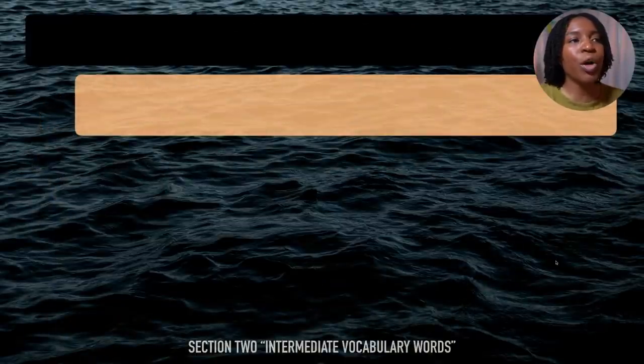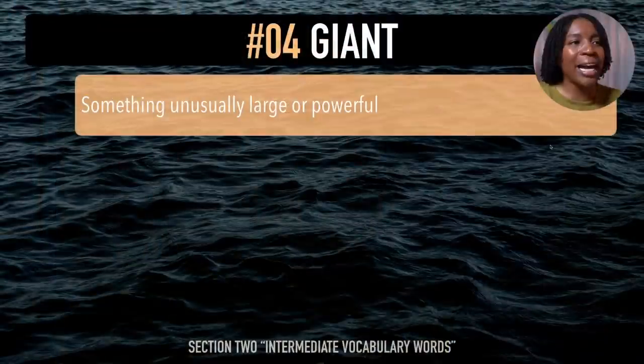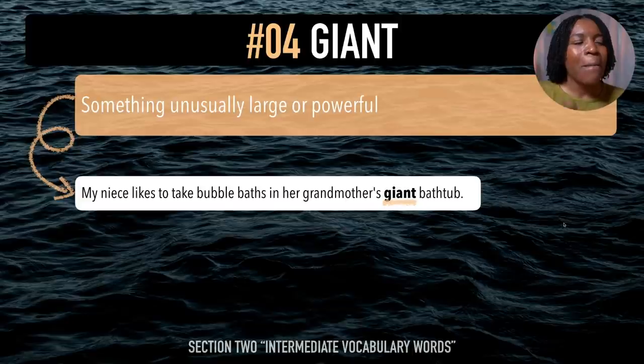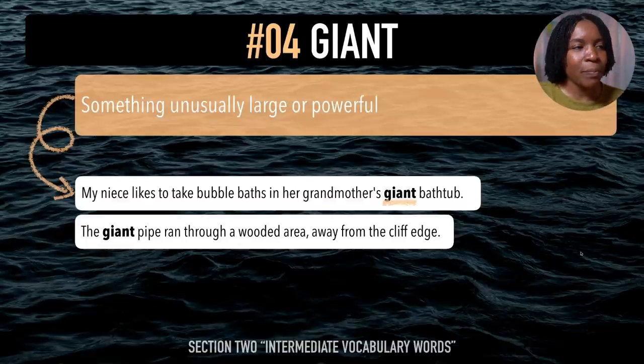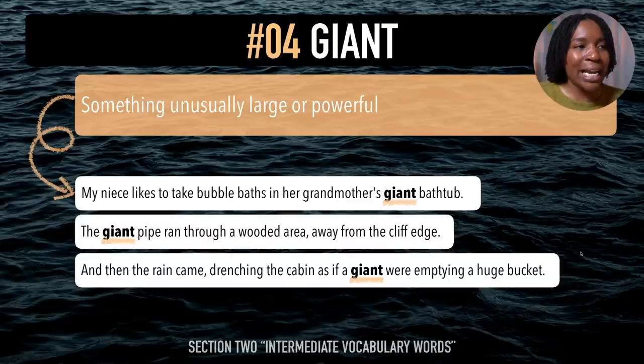The next intermediate vocabulary word is 'giant'. This has the 'juh' sound at the beginning. After me — giant. The word giant means something unusually large or powerful. Example sentences: My niece likes to take bubble baths in her grandmother's giant bathtub. The giant pipe ran through a wooded area away from the cliff edge. And then the rain came drenching the cabin as if a giant were emptying a huge bucket. Last time — giant.